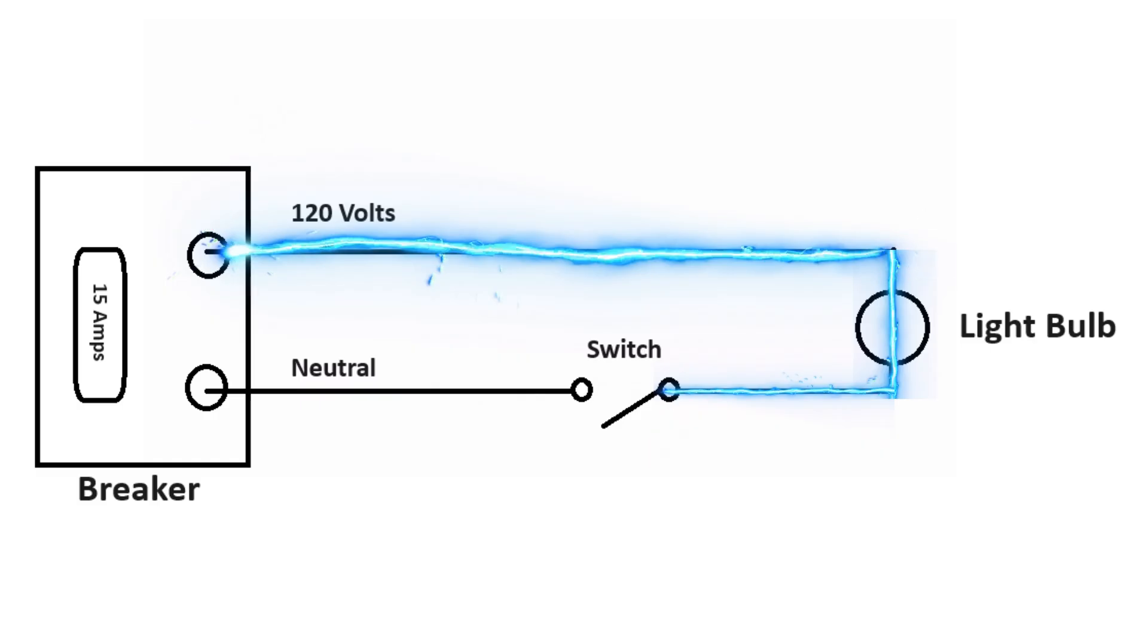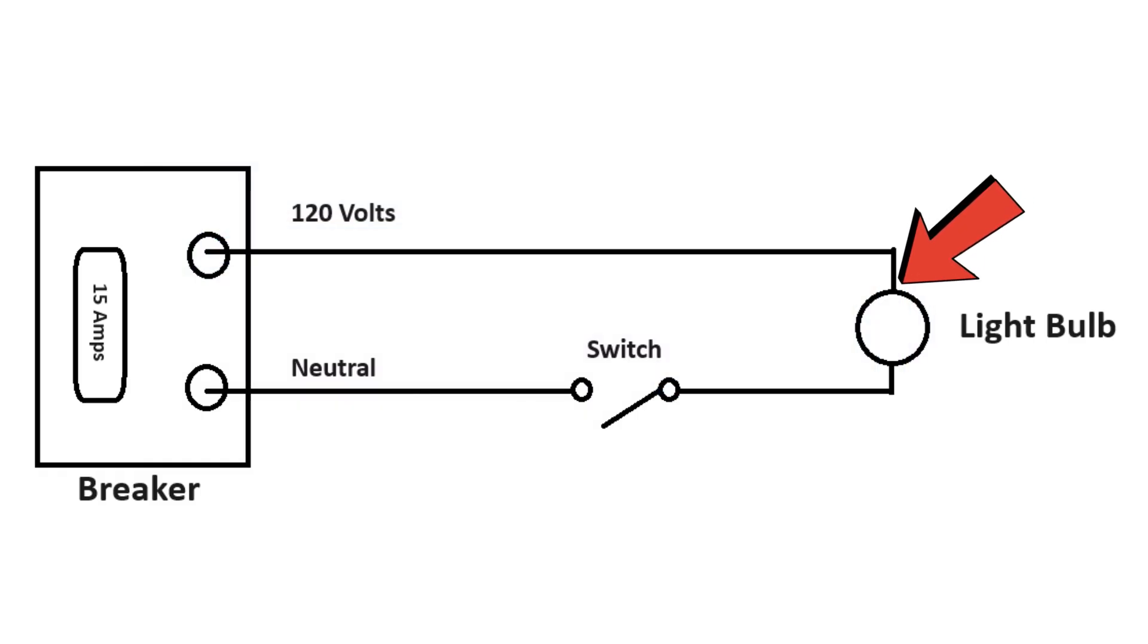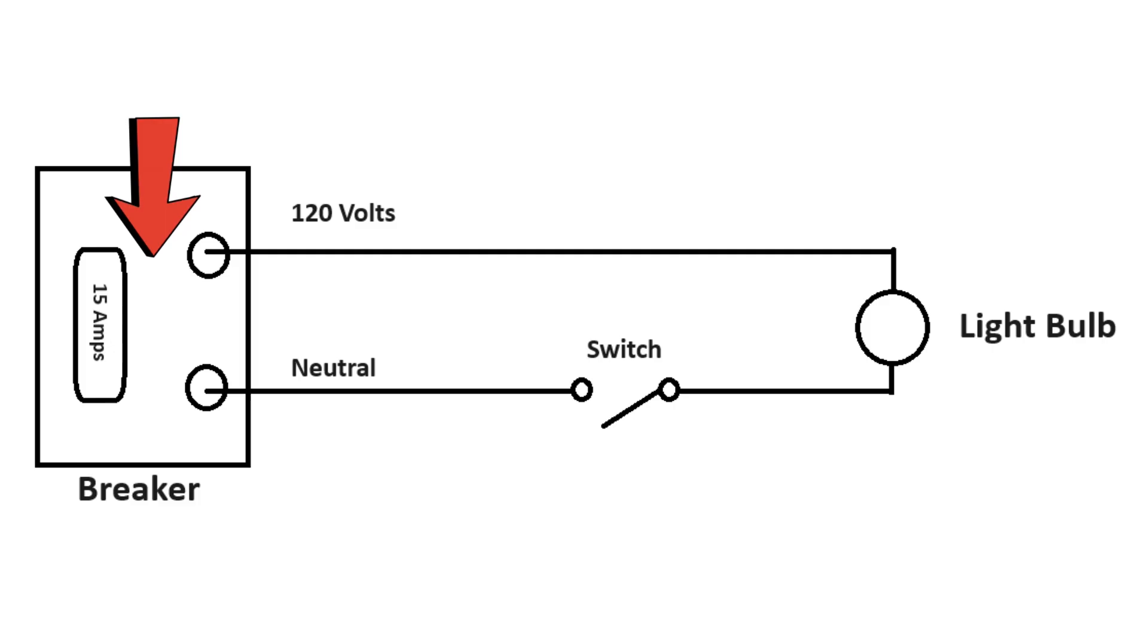The point here is that when you can start looking at a schematic in that way, you can start making key decisions on diagnostics and find key points where you can start performing your tests. And the schematic tells you what results you should get when you're performing that test. So if you were to test for power at a key point here and you don't have it, now you're starting to identify a problem. You might have a tripped breaker for example.